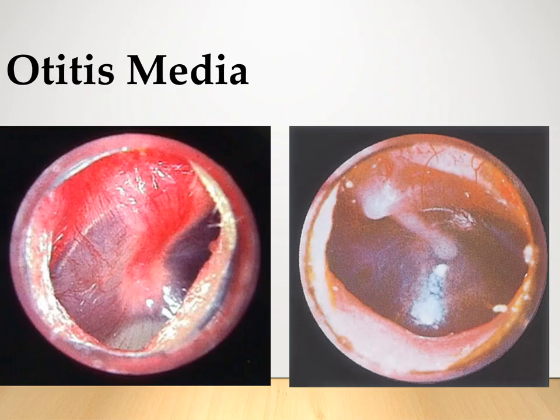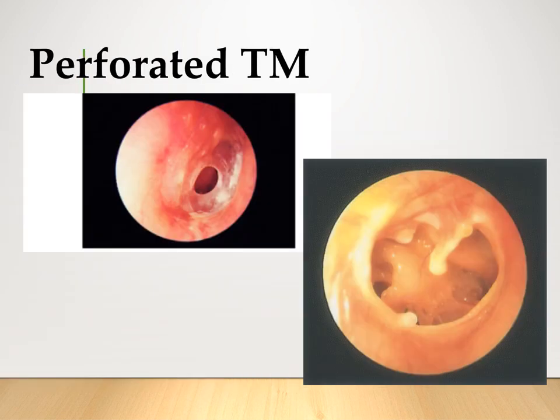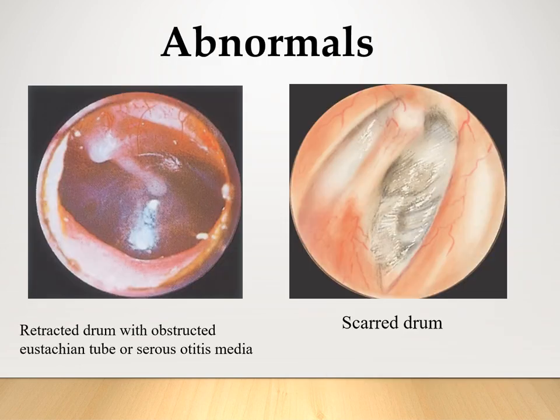This is a picture of otitis media — you can see the exudate there, and it also looks red and erythematous. Here is a perforation of the tympanic membrane — you can see the holes. If there is a perforation, the hearing is going to be impacted because there is nothing for the eardrum and the incus and stapes to utilize for hearing transmission. Other abnormals include scarring from past perforations.